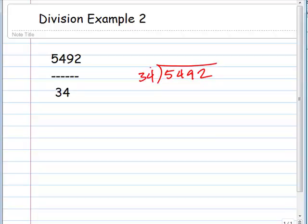And we ask ourselves how many times is 34 going into 54. 34 times 2 is 78 and so that's too much. So we go 1. 4 and 3. We subtract. We get 20.